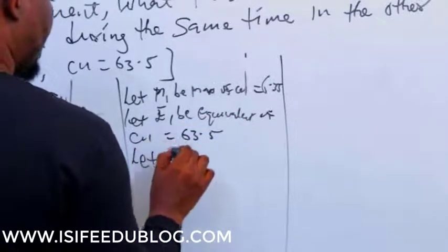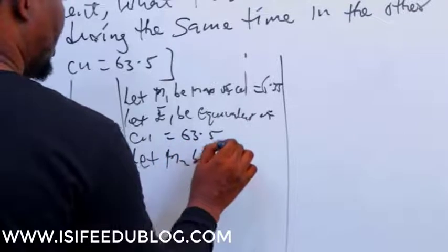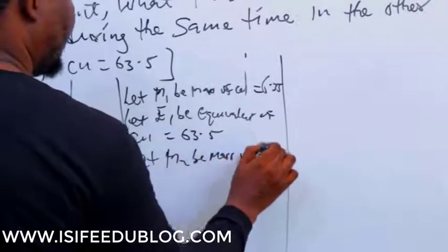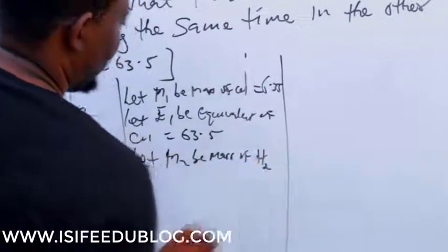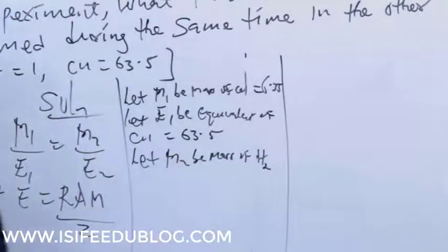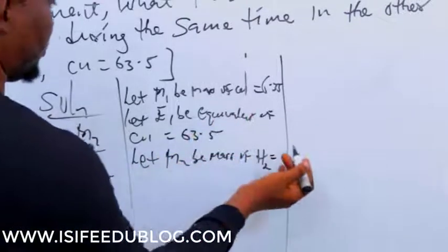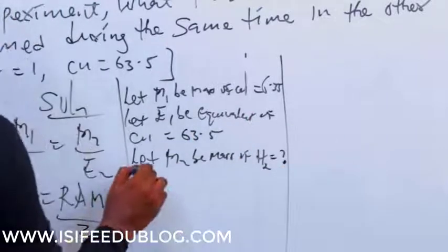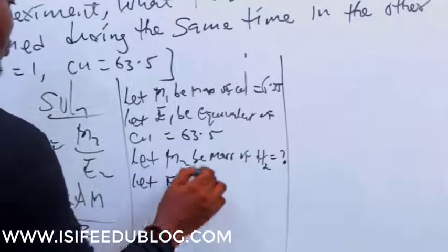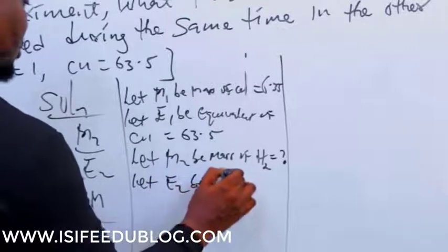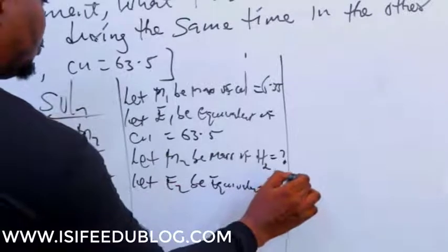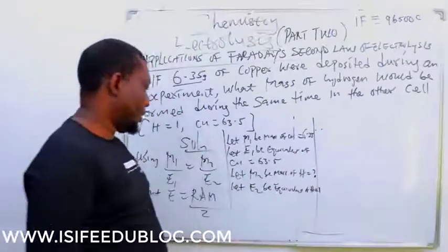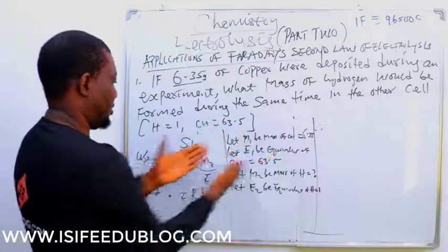So, let M2 be mass of H2, hydrogen. Let E2 be equivalence of H2, which is 1. Now let's put these parameters here.